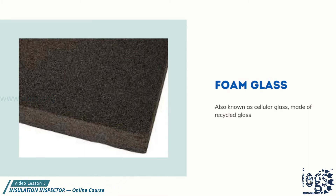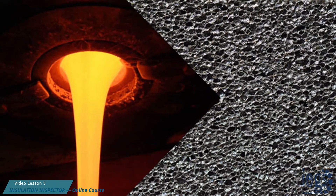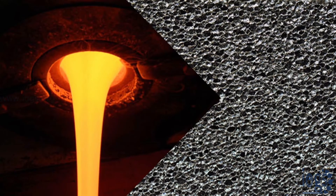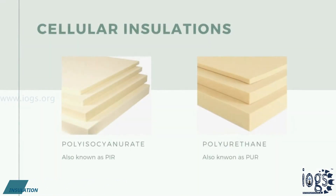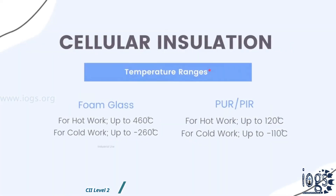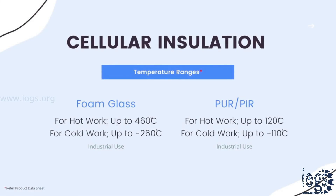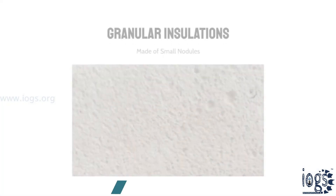The recycled glass undergoes a melting process that creates the cellular structure of the insulation. Other names for cellular insulation materials are polyurethane and polyisocyanurate. Cellular insulation materials are mostly used for cold insulation work but can also be used for hot work, and are usually recommended for industry use.